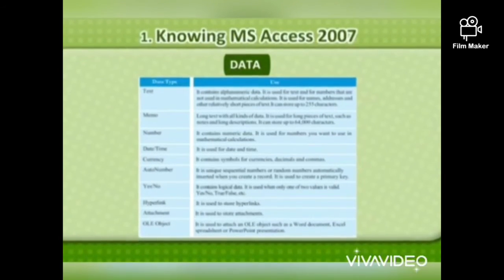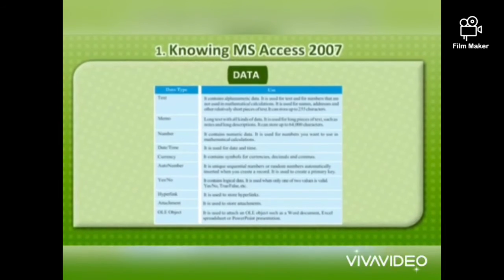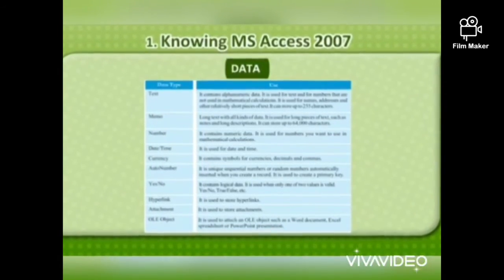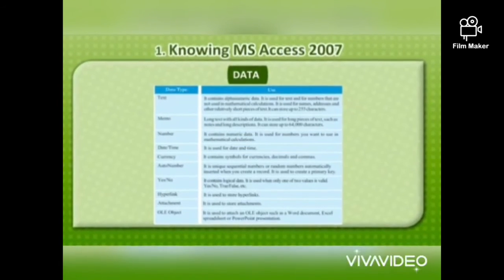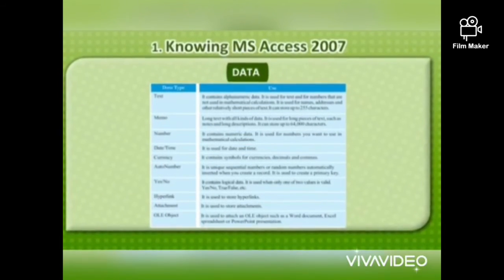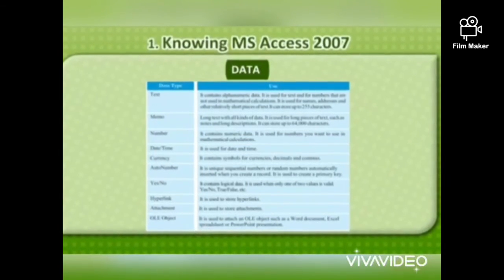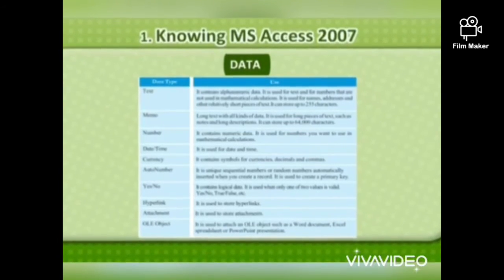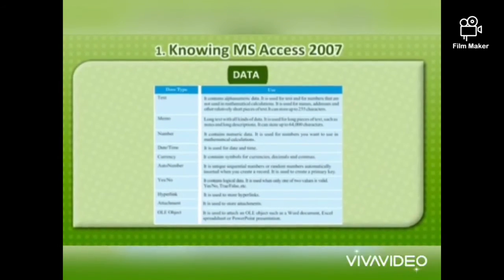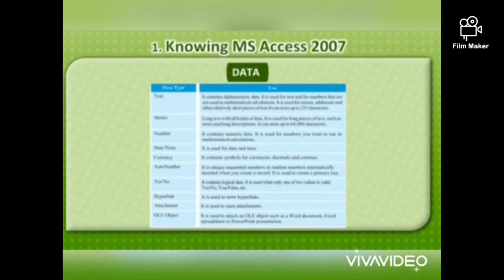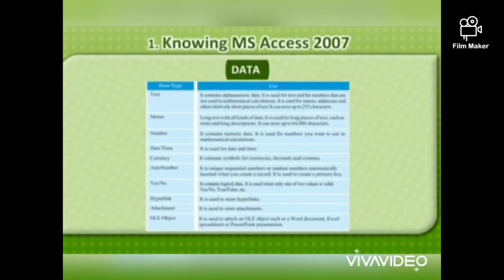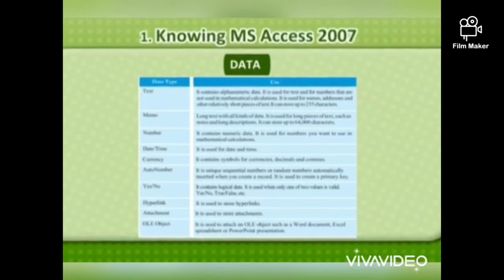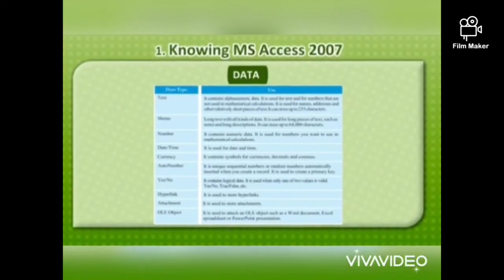Currency: it contains symbols for currencies, decimals, and commas. Auto number: it is a unique sequential number or random number inserted automatically when you create a record. It is used to create a primary key. Yes or No: it contains logical data and is used when only one of two values is valid, such as Yes or No, True and False, etc.